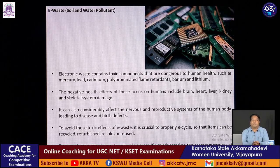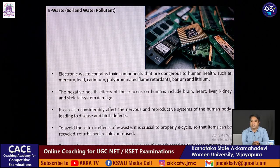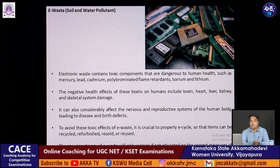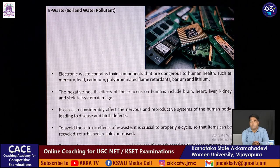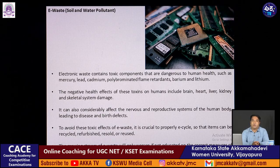E-waste is another type of contamination recently observed. Electronic waste contains toxic components dangerous to human health, such as mercury, lead, cadmium, polybrominated flame retardants, barium, and lithium. These directly affect the brain, heart, liver, kidney, and skeletal tissue. E-waste also has considerable effects on the nervous system and reproductive system, and can lead to diseases and birth defects. To avoid these toxic effects, it is crucial that E-waste is recycled. The growing stream of E-waste will only worsen if people are not educated on the correct measures of its proper disposal.